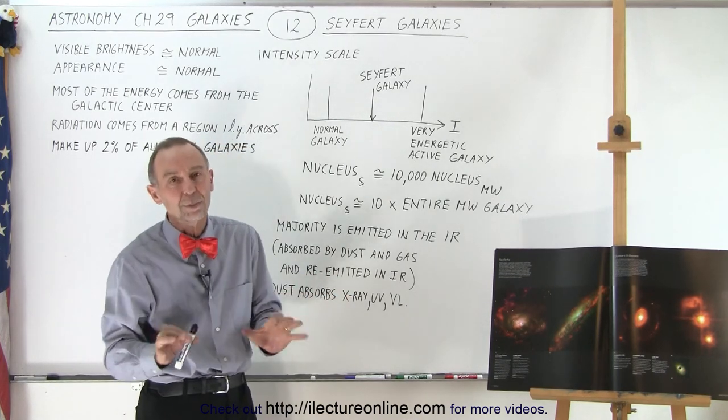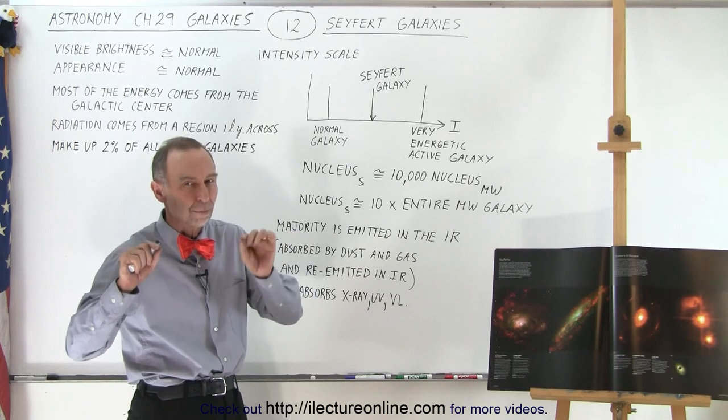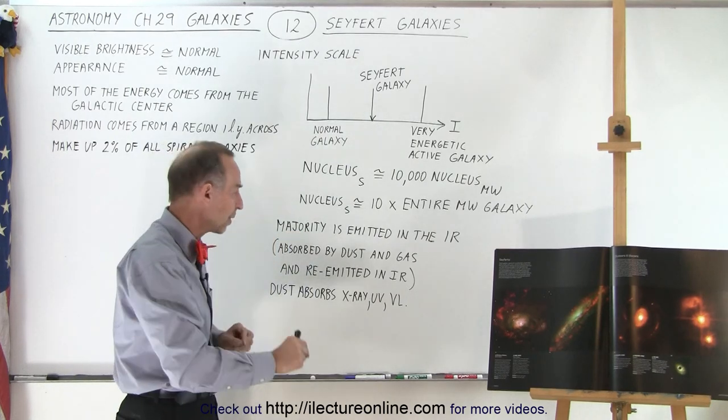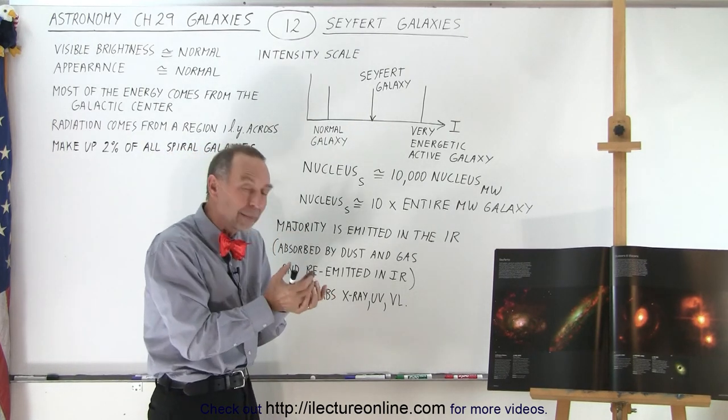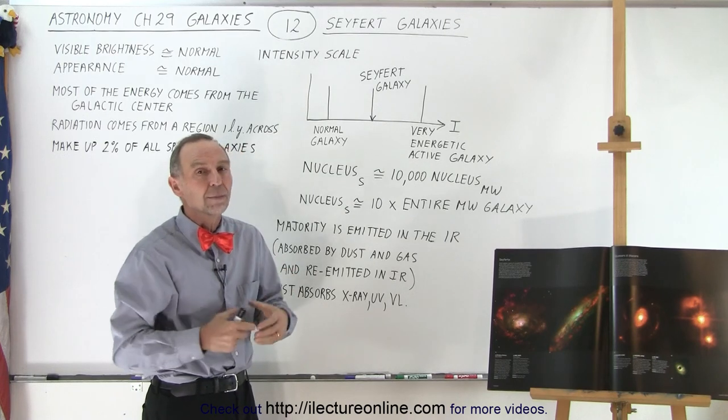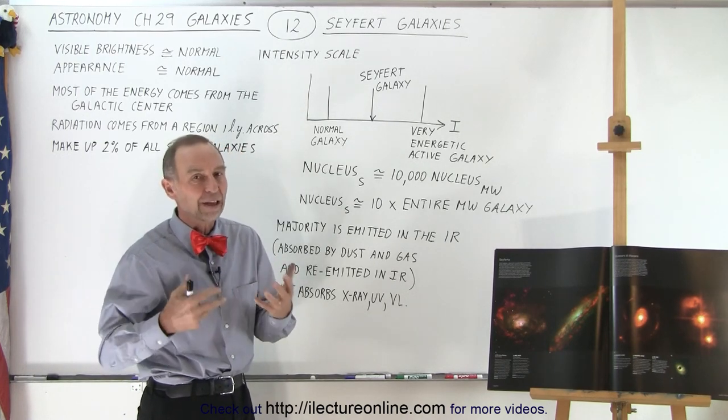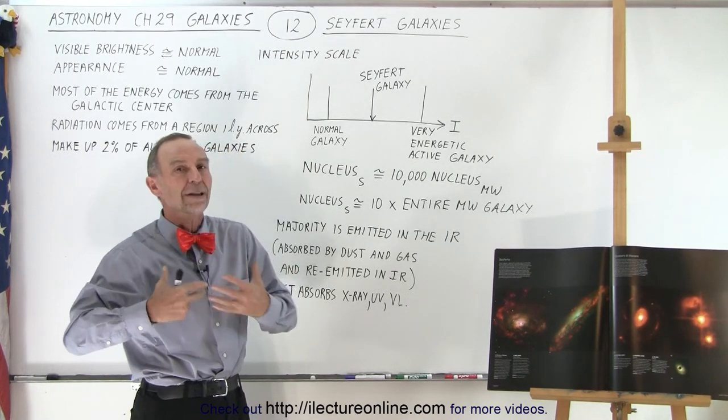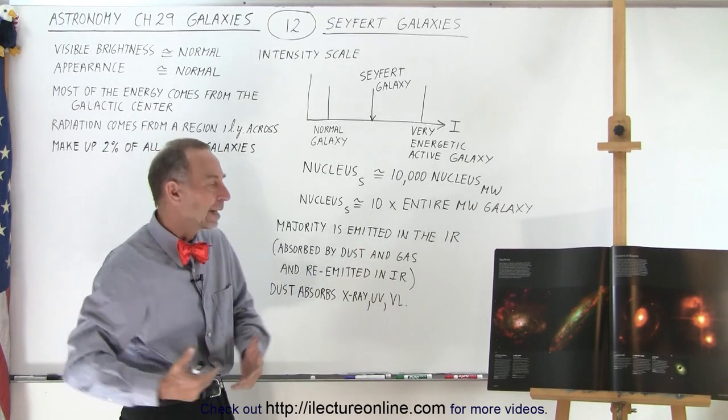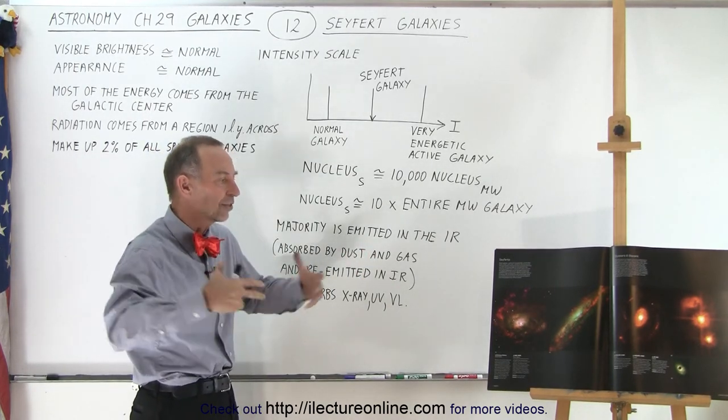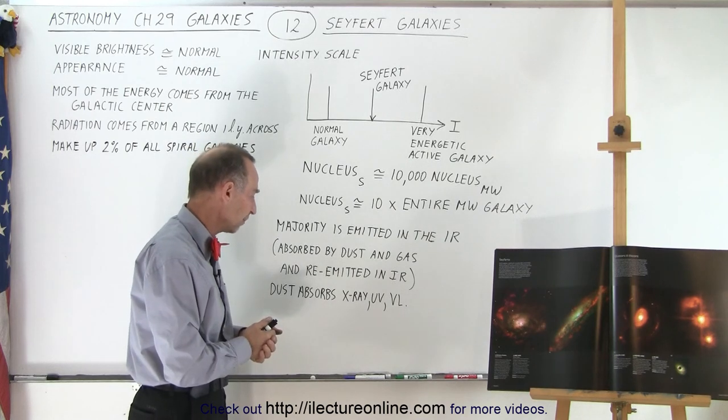Now, of course, not all of it is absorbed. Some of it does get out and we're able to measure the UV, the x-ray, and the visible light coming from that central region. But much of it is absorbed and the vast majority of it is turning to infrared before it's radiated out to the rest of the galaxy and outside the galaxy where we can measure it.